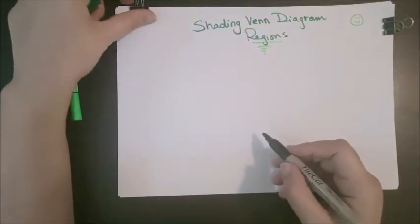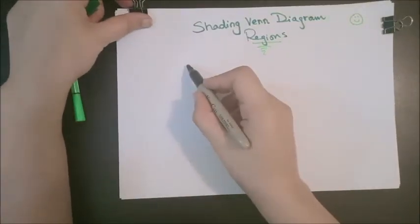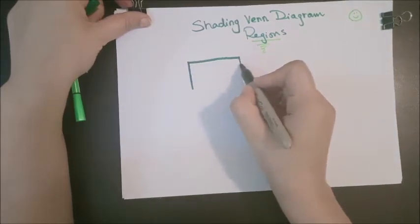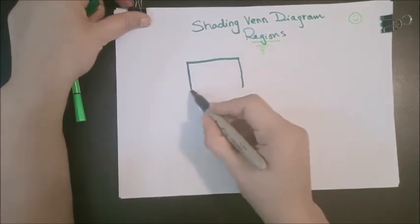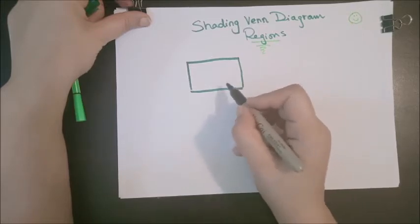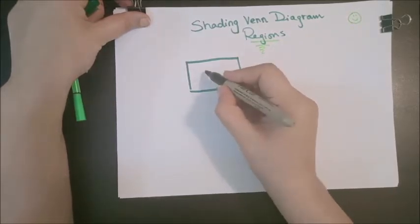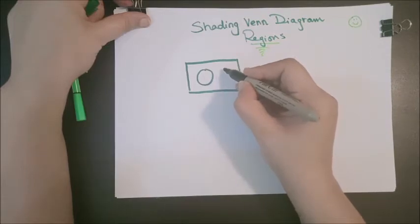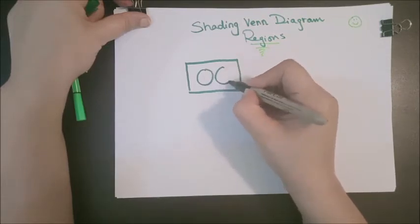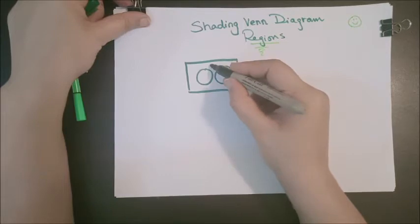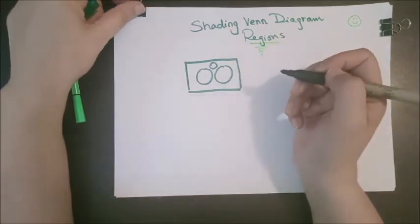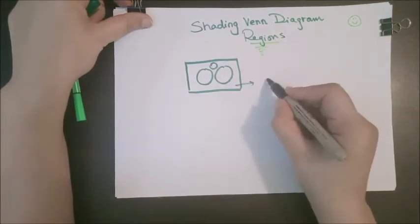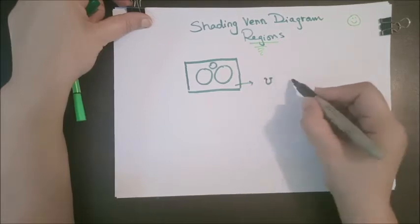First of all, we usually denote our universal set with the help of a rectangle, and all sets present in the universal set are denoted by circles. If there are two sets, you will denote them by two circles; if there is another set, you will show it with another circle. This is denoted by U and we call it the universal set.